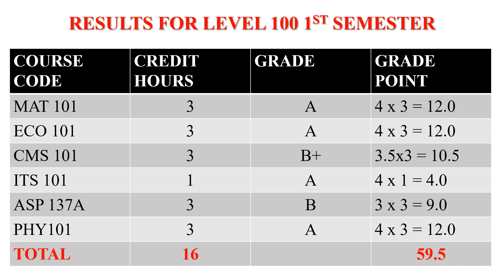Let's assume this is the result for a particular student in Level 100 first semester. On the far left-hand side we have the course code, followed by the credit hours, then the grade, and the last column is the grade point. Under the course code we have MATH 101, ECO 101, CMS 101, ITS 101, ASP 137A, and PHY 101. To each course there is a respective credit hours.